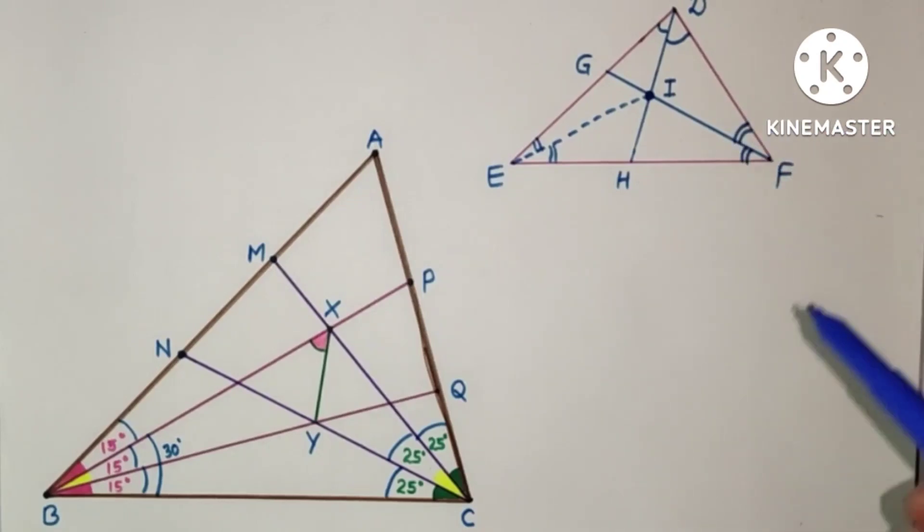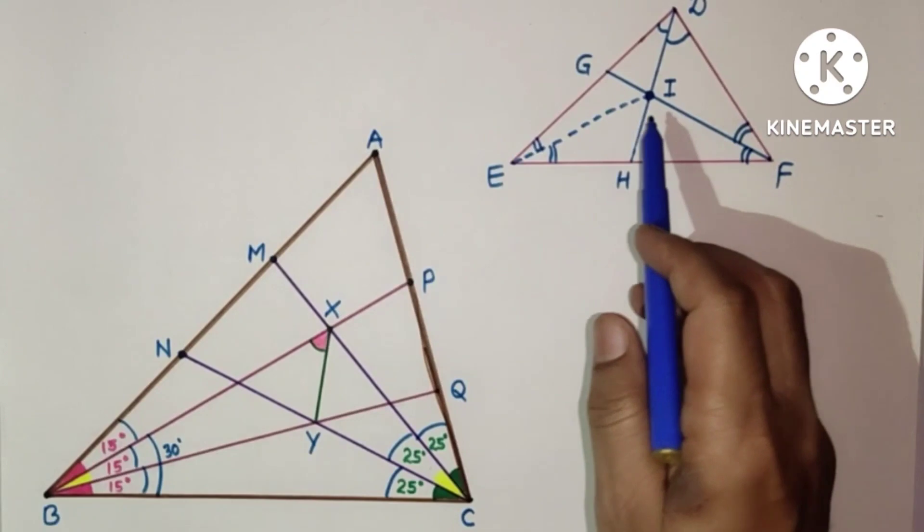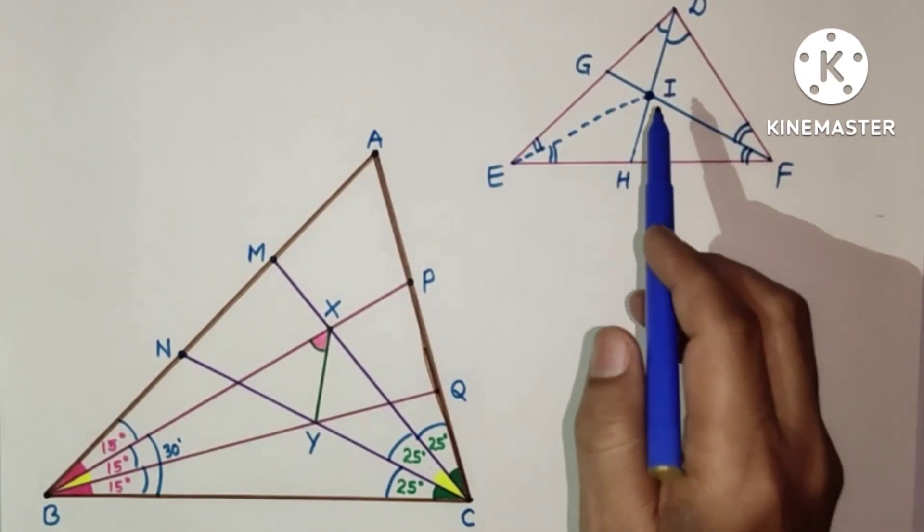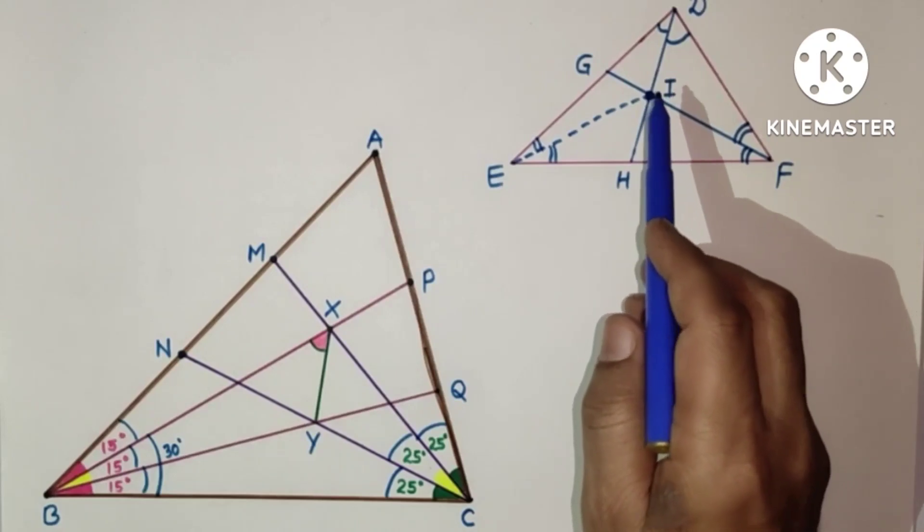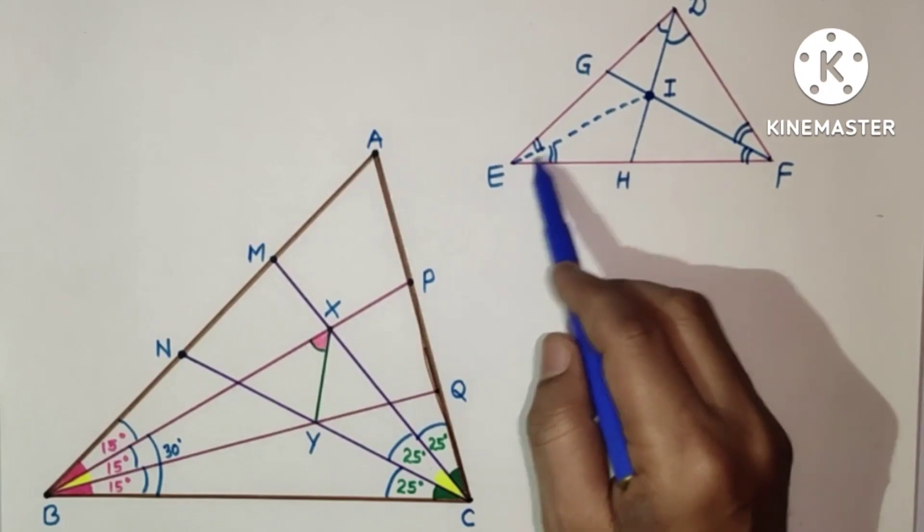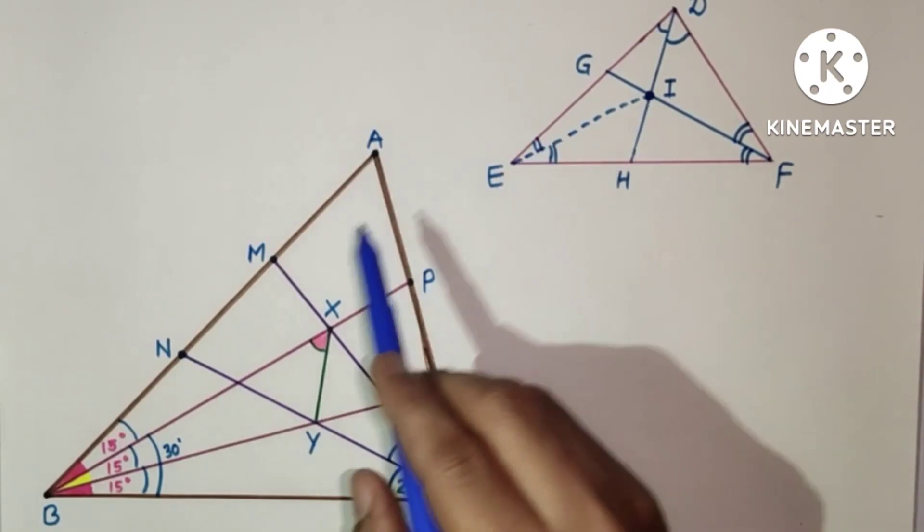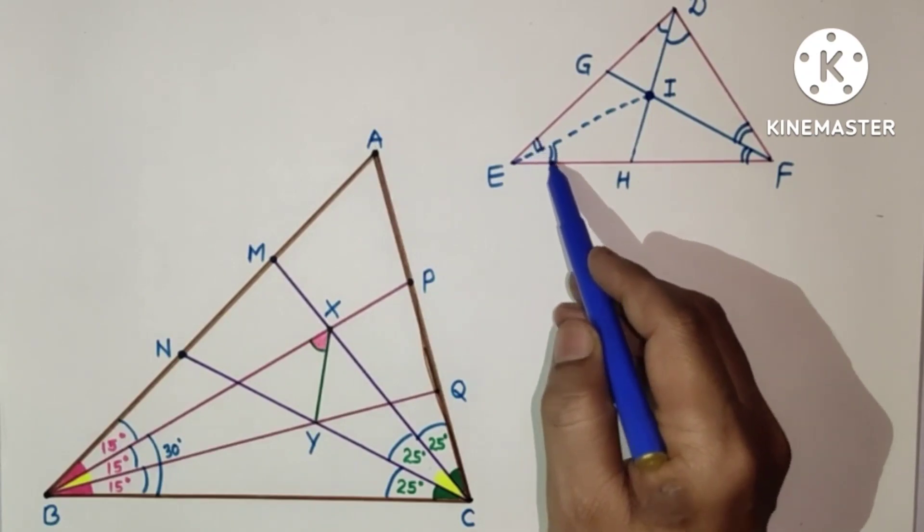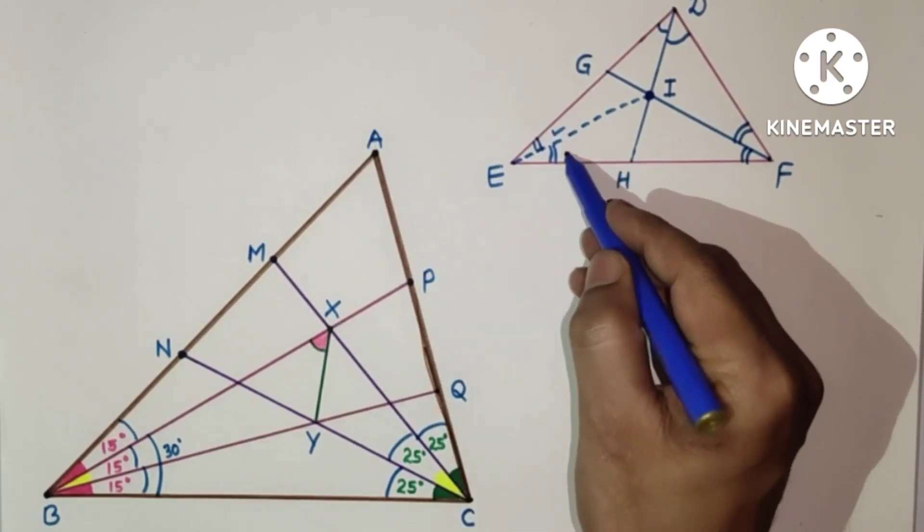In any triangle, intersection point of angle bisectors will be incenter. If we find intersection point of any two angle bisectors and from that incenter if we join the third vertex, that will also bisect the third angle. So here EI is the angle bisector of this angle. So this angle is equal to this angle.